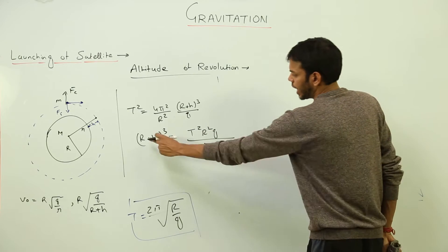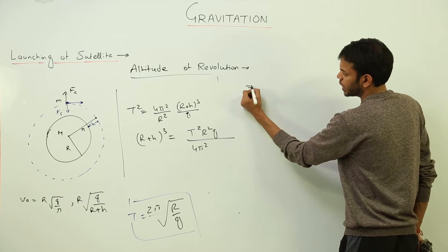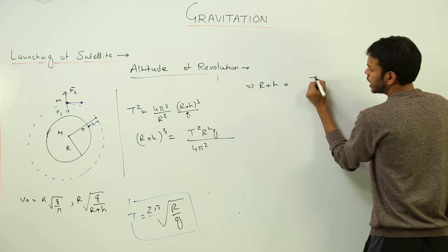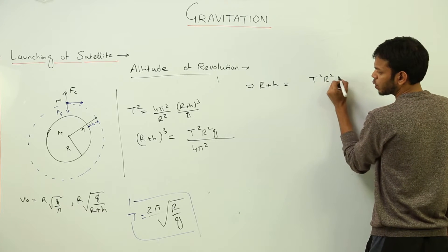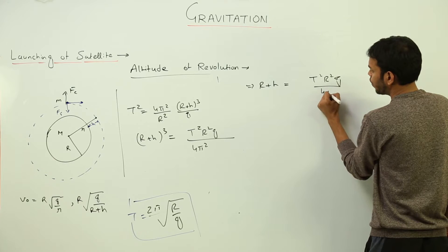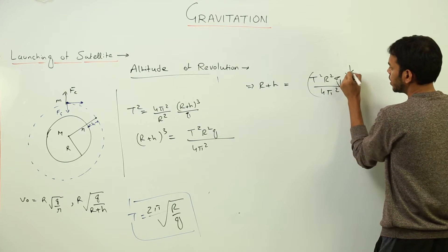That means r plus h, this equation gives me r plus h is equal to t square r square g upon 4 pi square cube root.